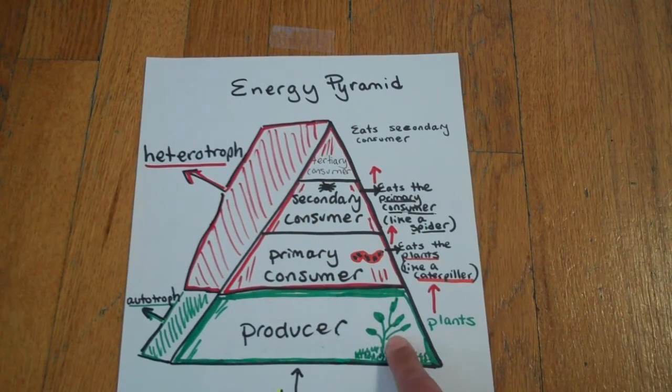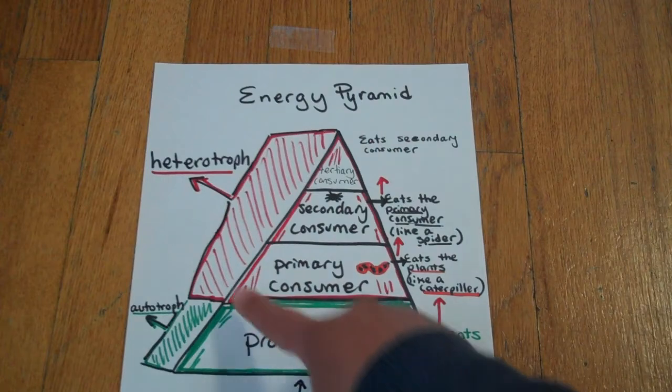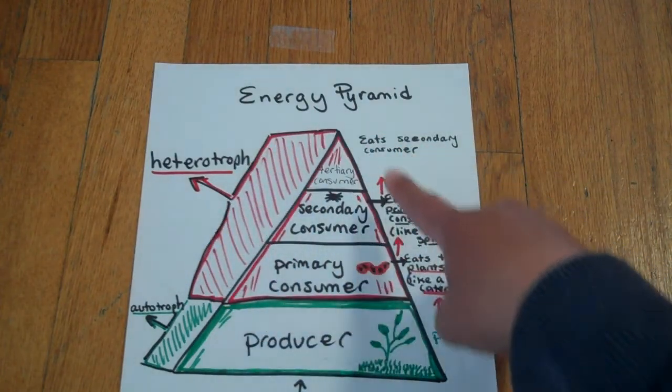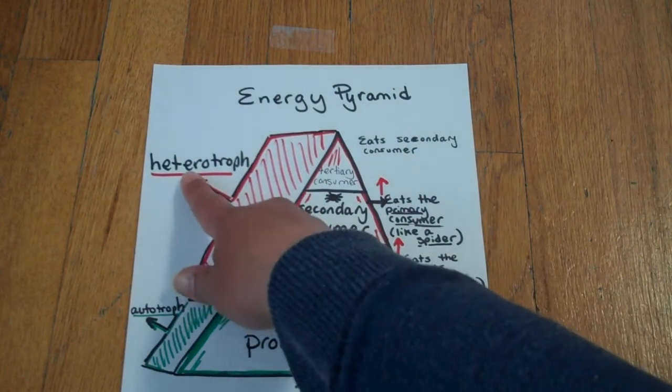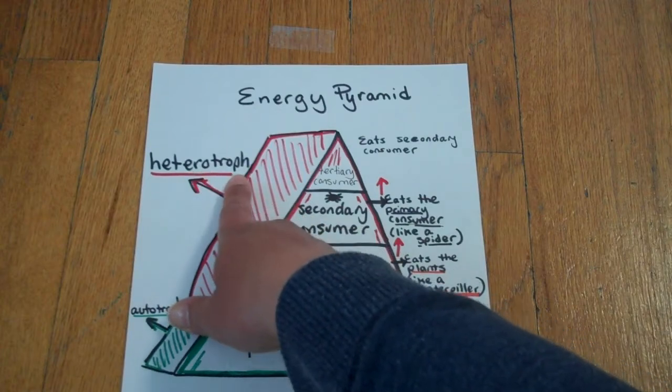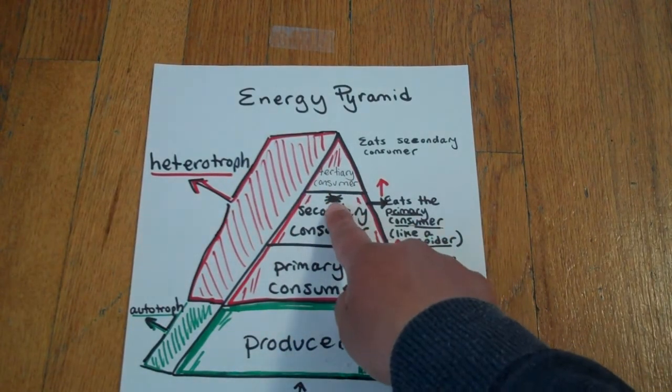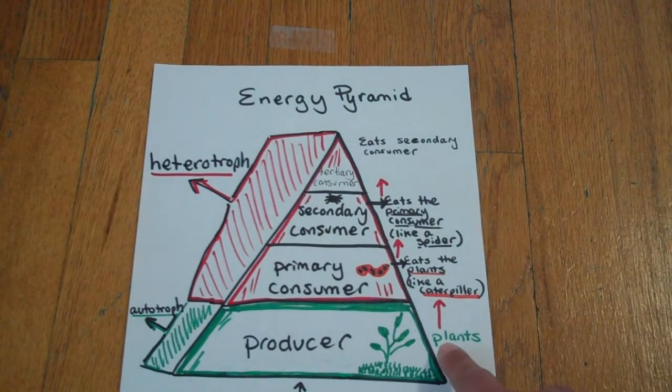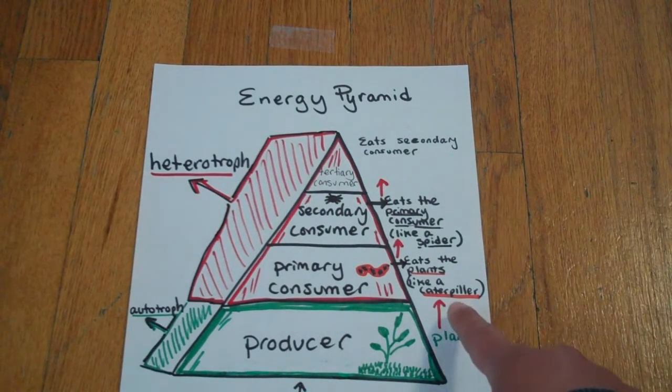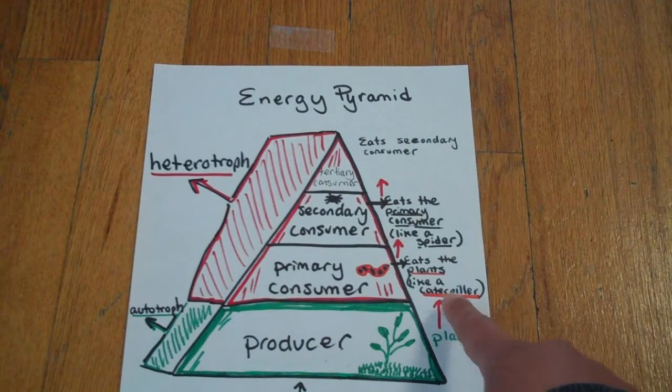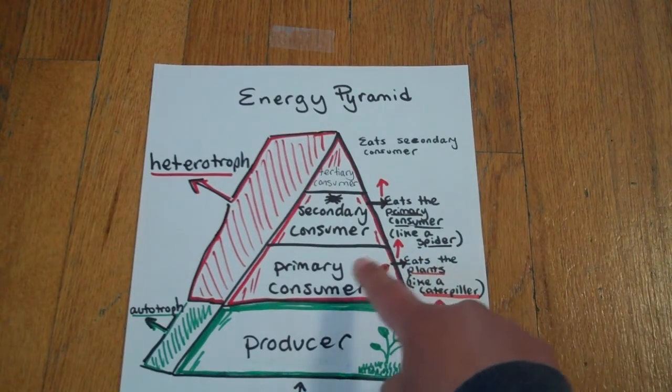They're able to convert the sun's energy into chemical energy. Anything that eats something else is called a heterotroph. They must find different things to eat, such as a caterpillar and a spider. So when the plant is eaten by the caterpillar, it is consumed.